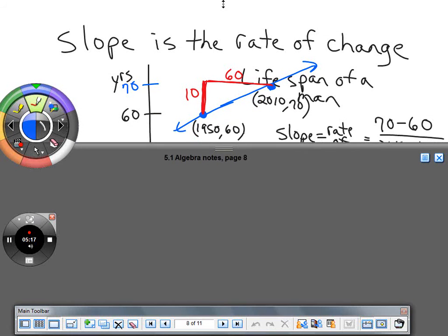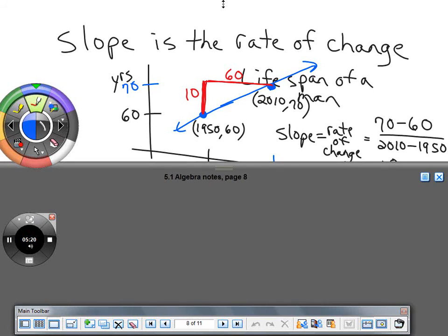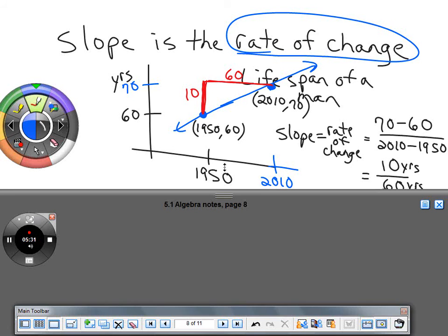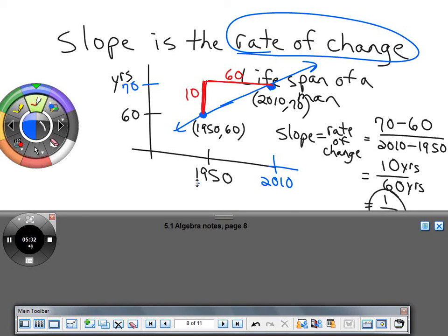There are lots of applications to slope. Slope is actually the rate of change of a function. For example, in 1950 we expected men to live 60 years. In 2010, we might expect men born that year to live to be 70.